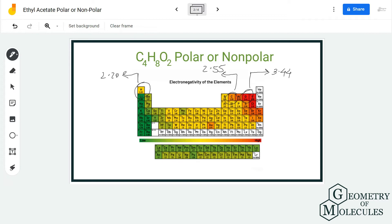and carbon, it is less than 0.4, so we are not going to count that. But if you look at the electronegativity value of oxygen and compare it with carbon and hydrogen, it is quite higher than 0.4, which makes the bond between carbon and oxygen polar.